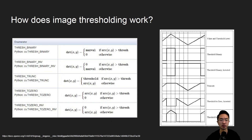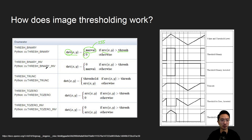So how does image thresholding work? There are a couple of types presented in OpenCV. One of the main ones is called Thresh Binary. Based on your input pixel — if it's greater than whatever threshold you set, then the value will be your max value, which in this case is 255. Otherwise it's going to be 0. For the inversion one, these two values are just swapped.